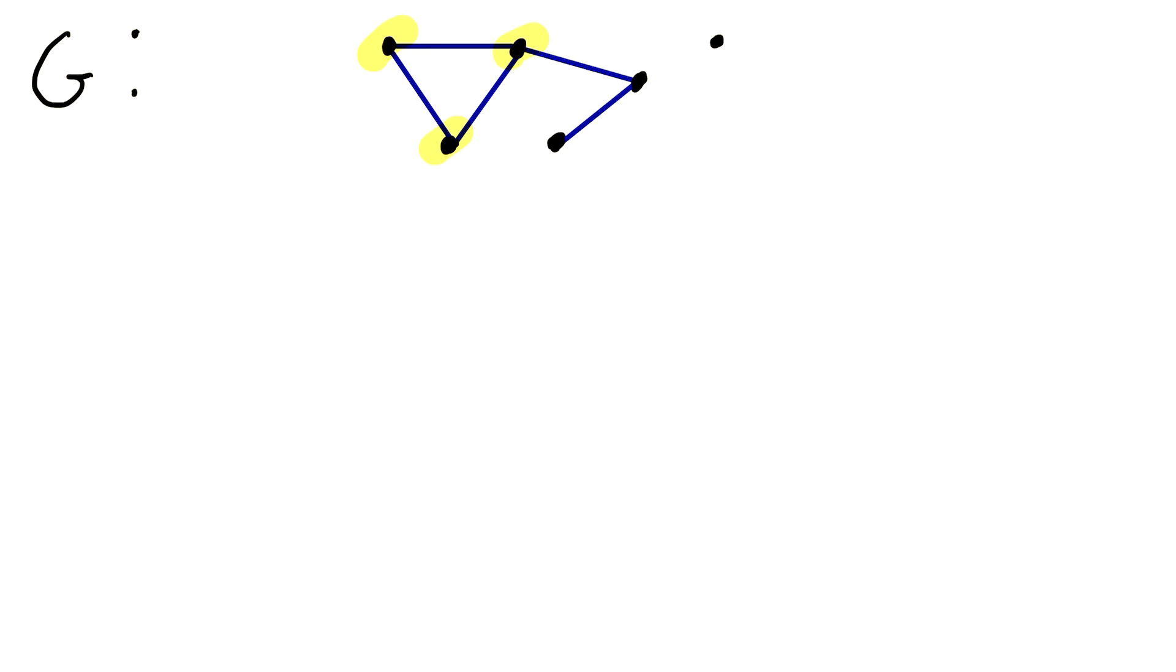So there's one, two, three, four, five, six vertices in this graph G. Thus, the order of the graph is six. It's the number of vertices in the graph.